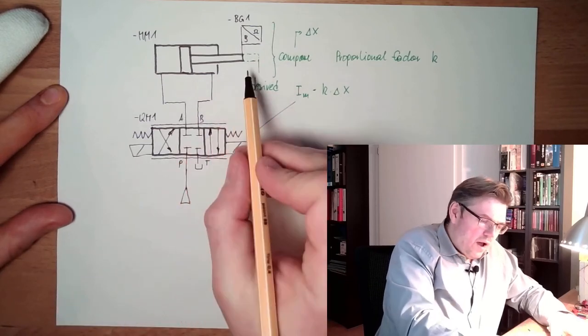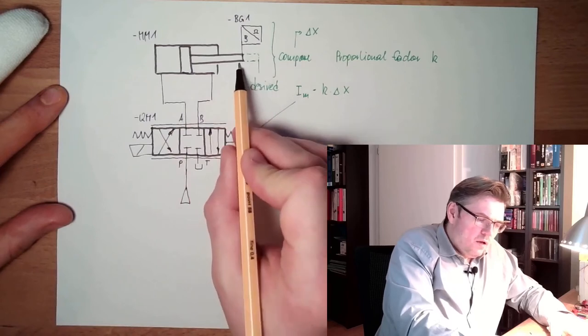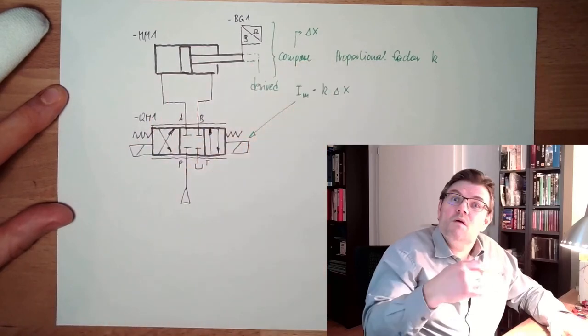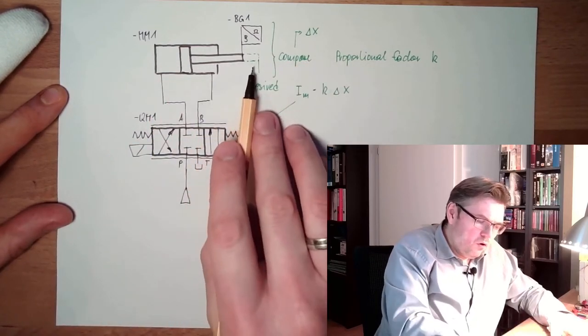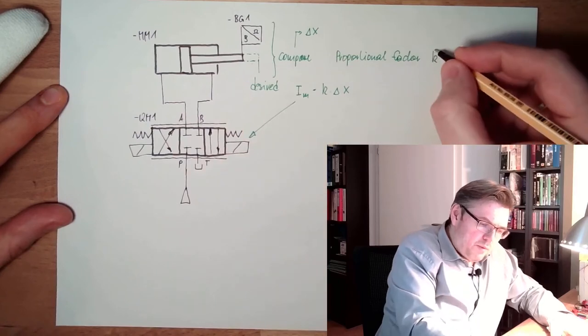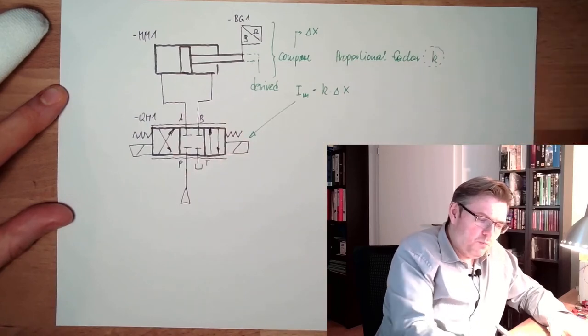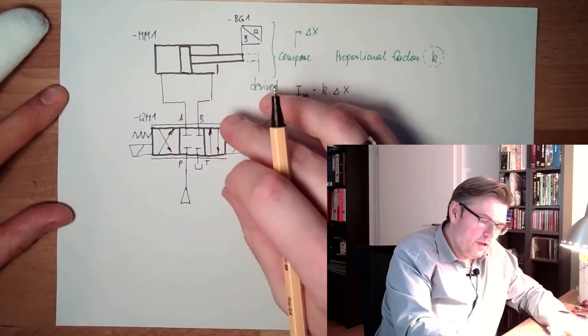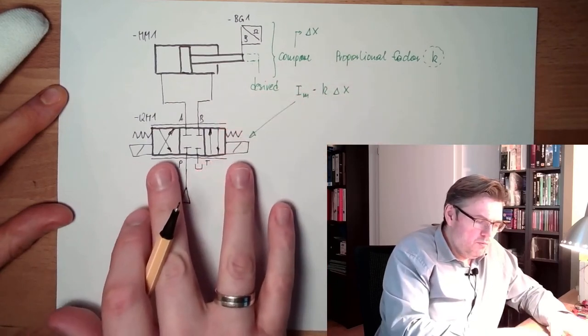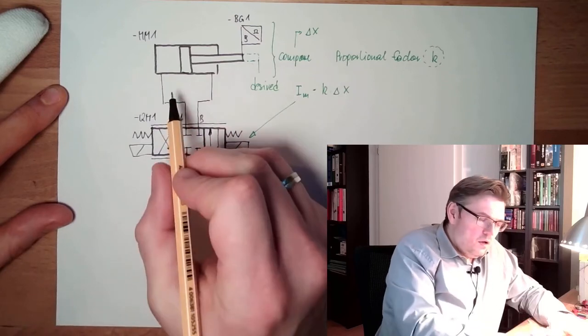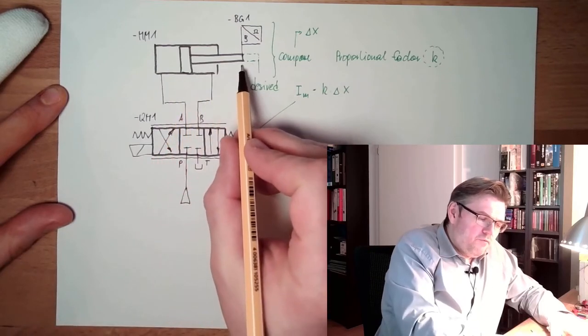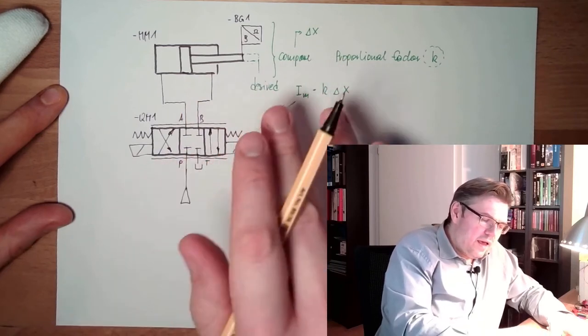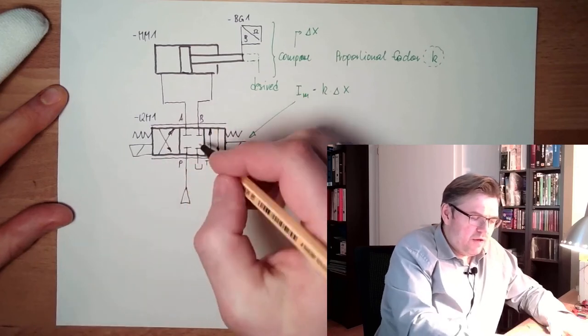And so if I am now far away from the desired position, I will move this to full extended. This will start to move pretty fast. If I am getting closer, depending on this gain factor, this proportional factor here, the magnetic current will get reduced. We will slowly move in middle position and this will get slower.